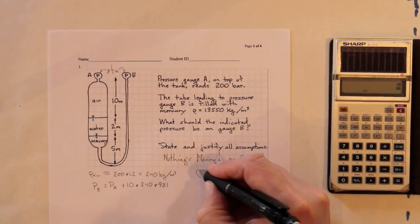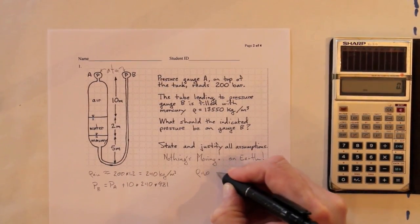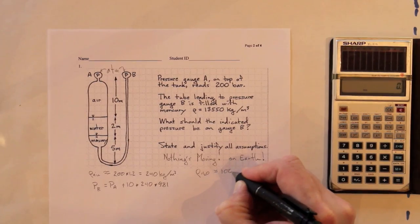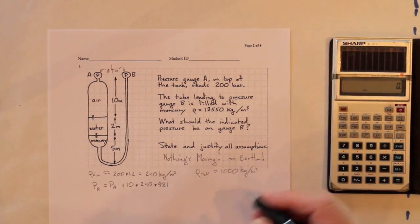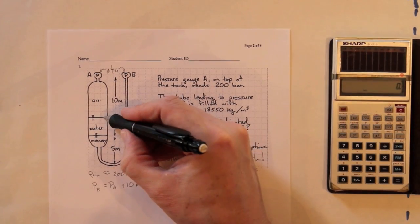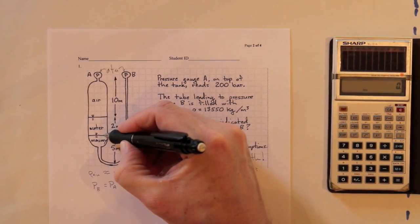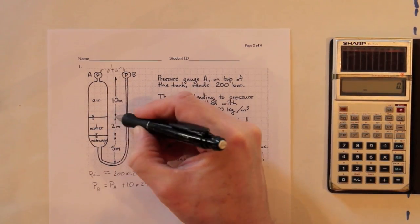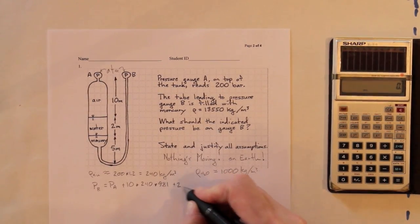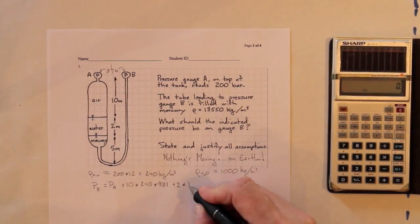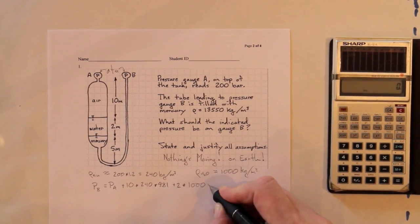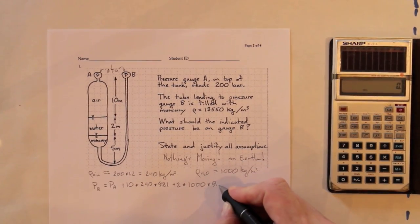And then water, let's take density of water equal to a thousand kilograms per cubic meter. The pressure will increase again going down here to the surface of the mercury. It's two meters times the density of the water is a thousand times G is 9.81.